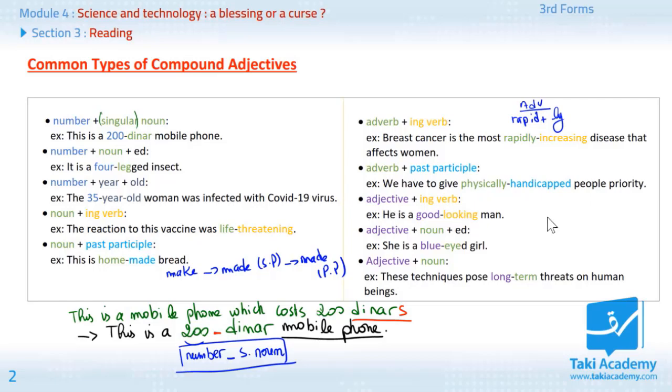Next one. Adjective plus ing verb. Example. He is a good looking man. Adjective is good. Looking is an ing verb.